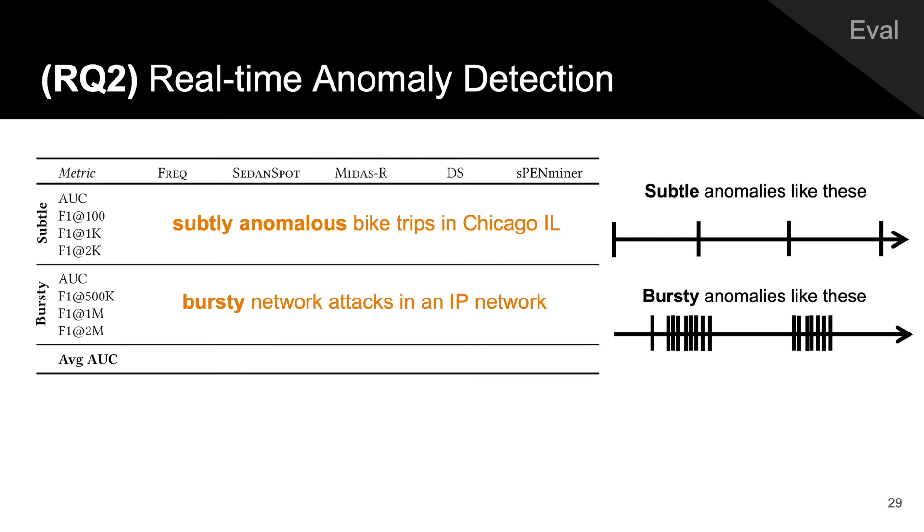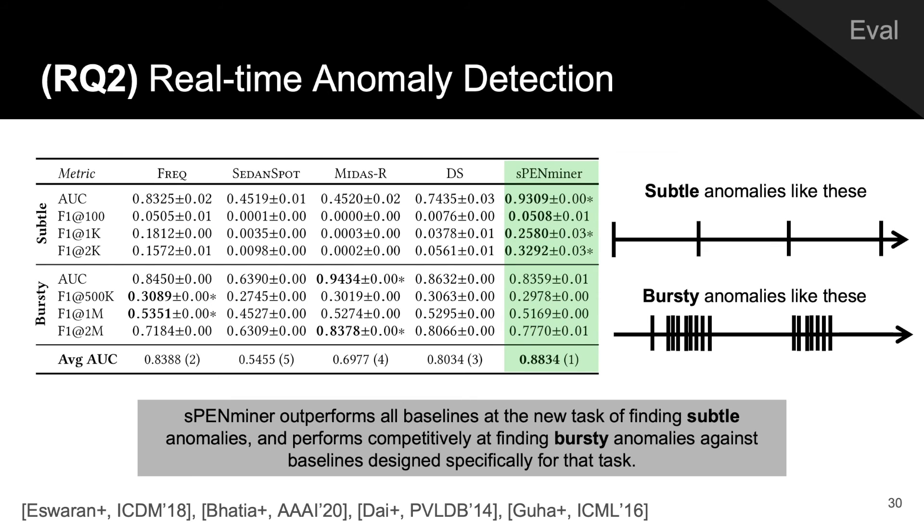To identify anomalies in real-time, in other words, outliers in the PVF plot, any streaming anomaly detection can be used. We chose the RandomCutForest method. S-PenMiner outperforms all baselines at the new task of finding subtle anomalies, and performs competitively at finding bursty anomalies against baselines designed specifically for that task.